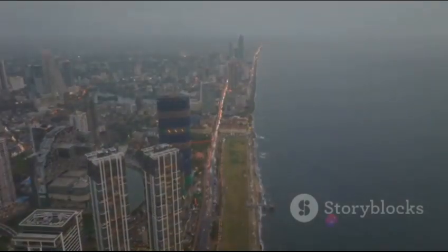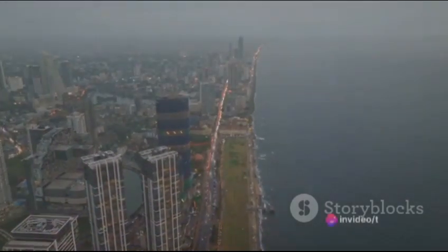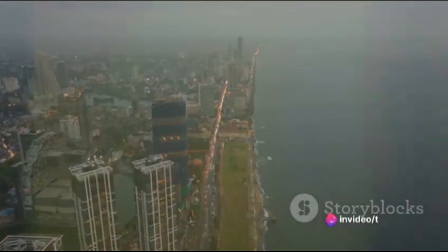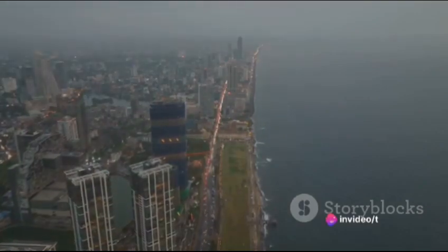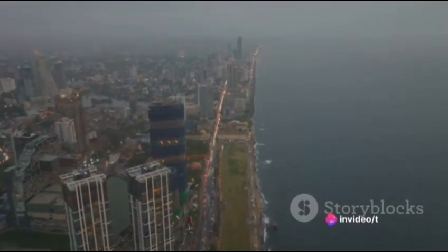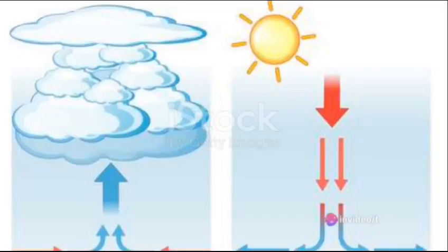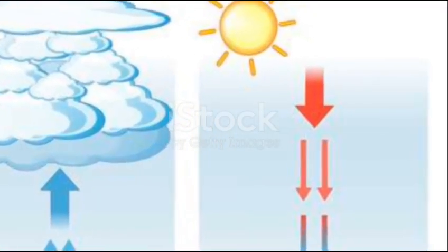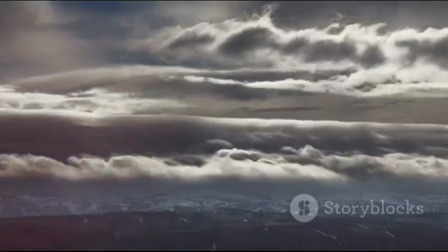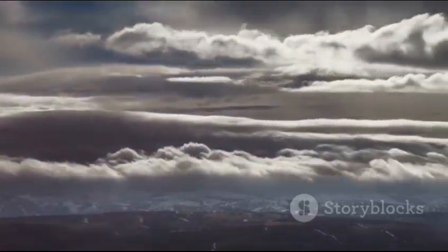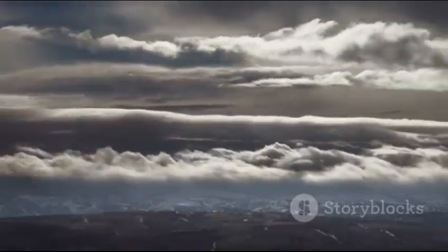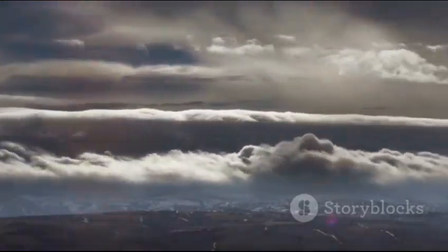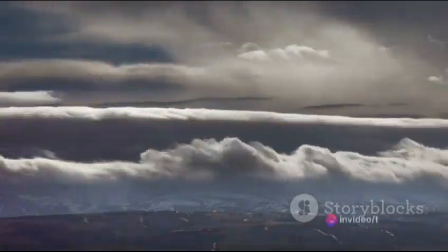As this cycle continues, the rotating wind intensifies, ultimately giving birth to a temperate cyclone. These cyclones are quite the spectacle — they are larger in size compared to tropical cyclones, often spanning over a thousand miles in diameter. That's like fitting over 30 Grand Canyons side by side.